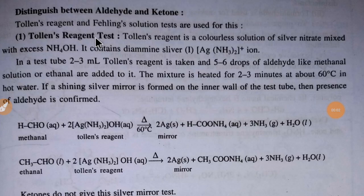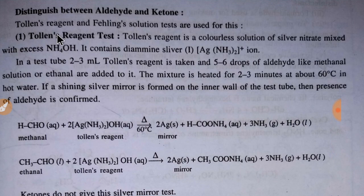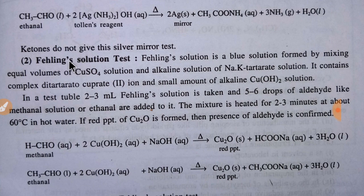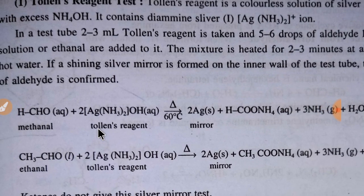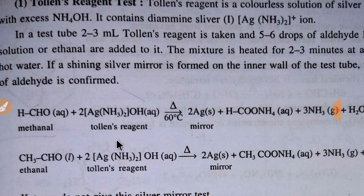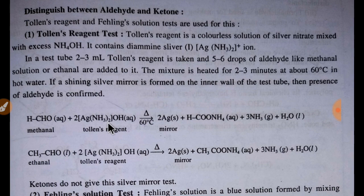Hello everyone, today we are going to learn about Tollens' reagent and Fehling's solution. First, we'll learn the definition of Tollens' reagent. Tollens' reagent is diamine silver hydroxide — that is the formula of Tollens' reagent. In detail, Tollens' reagent is a colorless solution of silver nitrate mixed with excess ammonium hydroxide.